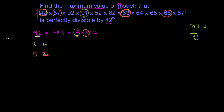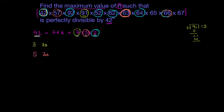Now let me count the number of 2s. All even numbers will give me a 2. So this is even — 1, 2 from here, another 2 from here, another 2 from here: 1, 2, 3, 4, 5, and 6. So I'll have 6 twos.